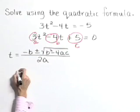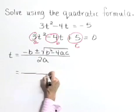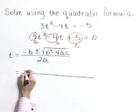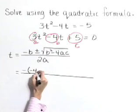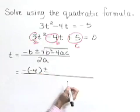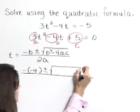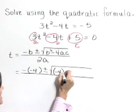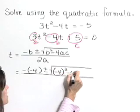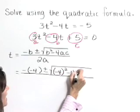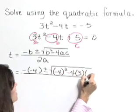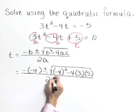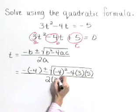Now substitute those values into your quadratic formula to get the opposite of b or the opposite of negative 4 plus or minus the square root of b squared, which is negative 4 squared minus 4 times a, which is 3, times c, which is 5, all over 2 times a or 2 times 3.